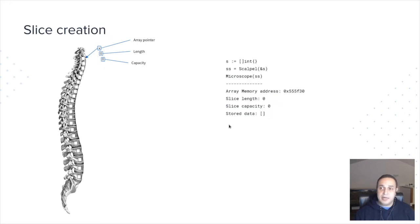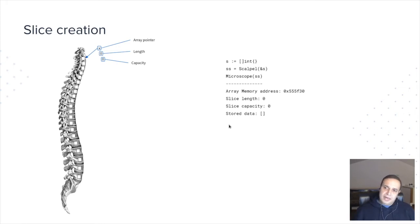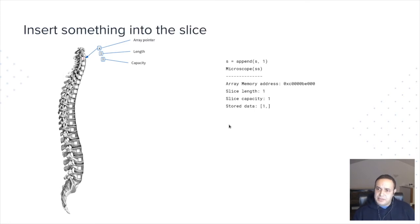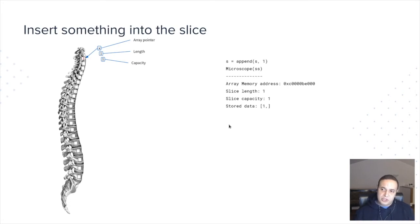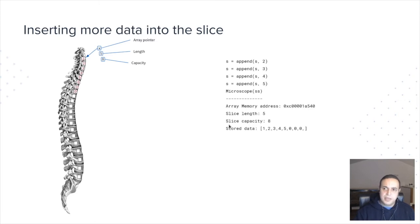Let's see how a slice looks like inside. A slice is just a pointer to an array, a length that is the length of the slice, and the capacity of the slice, which is the length of the array. The array is going to have a type that corresponds to the type of the slice. We're going to use integer as an example because it's simpler. If I create an empty slice, I'm going to get a memory address that is not pointing to anything meaningful. The length of the slice is zero, the capacity is zero, and the stored data is nothing. If I append something to this slice, now I have a real memory address pointing to an array. The slice capacity is one, it's an array of one integer position in memory, and the length is one.